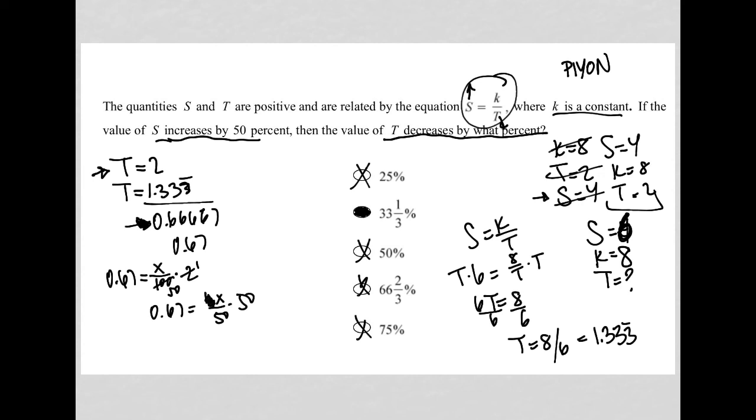So I multiply both sides by 50. So in my calculator, 0.67 times 50, and don't forget I rounded that 0.67, I get x is equal to 33. And my calculator says 0.5, but again, because I rounded, I don't trust that fully. So I know that my correct answer here is just 33 and a third percent.